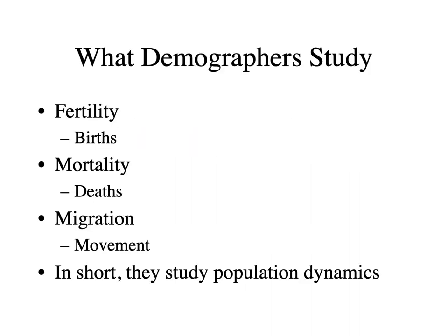For a population to change, you can only do so in three ways. People can be born, people can die, or people can move. If people are born, it changes the population dynamics, or the number of people in a country. If many people are born, the population grows. If not many people are born, the population shrinks.